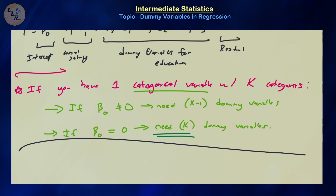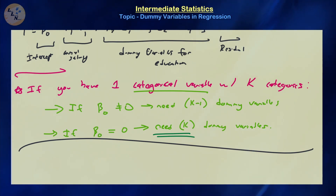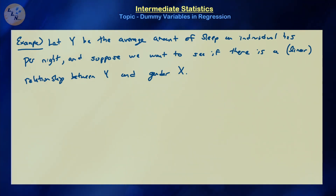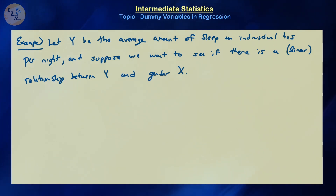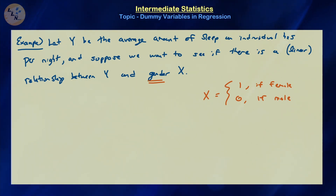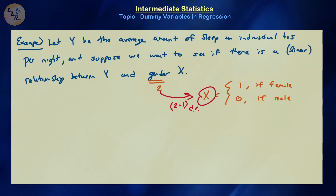Now that we've introduced dummy variables, let's look at examples. Suppose we want to study the relationship between the average amount of sleep an individual gets per night and their gender. We define x to equal 1 if the respondent is female and 0 if male. Since gender has two categories, we need only one dummy variable — two minus one — for this model.